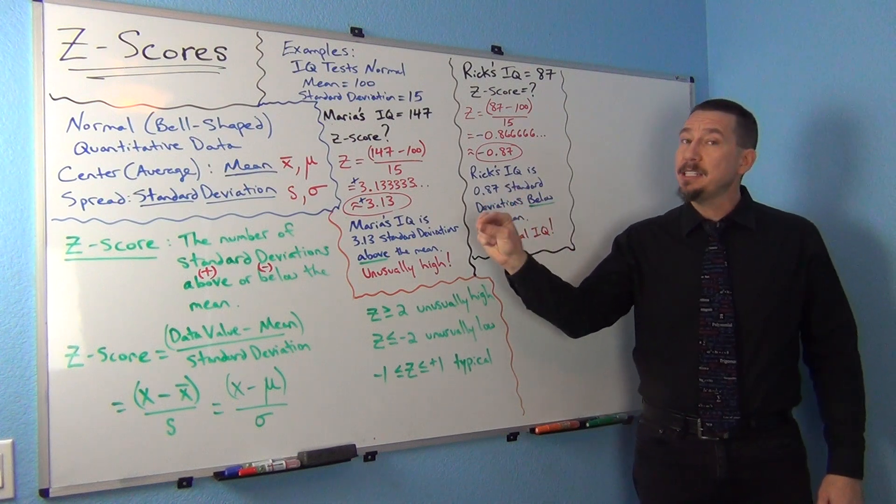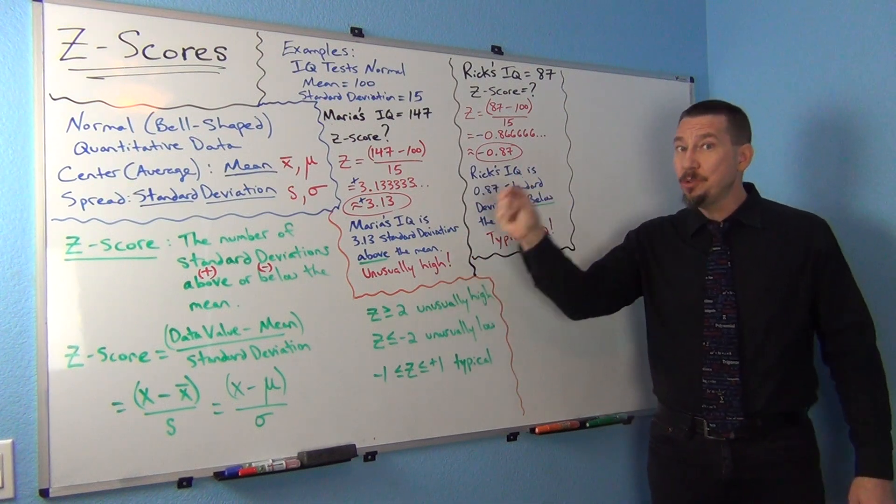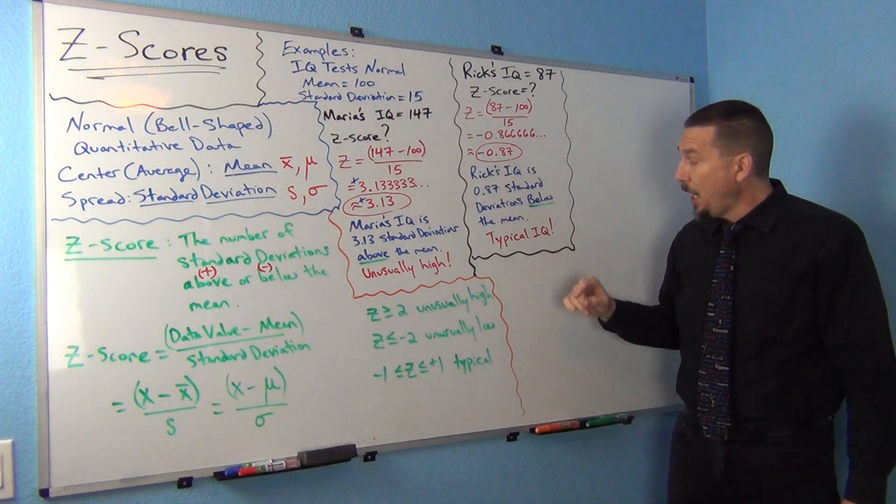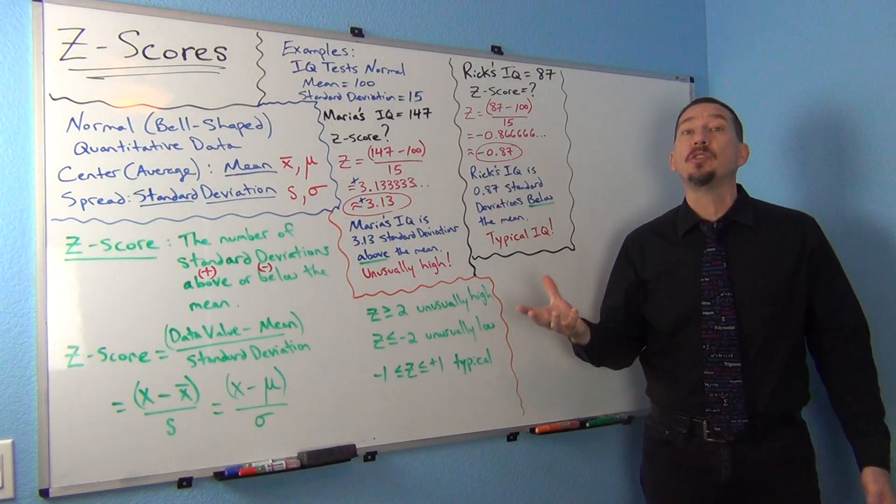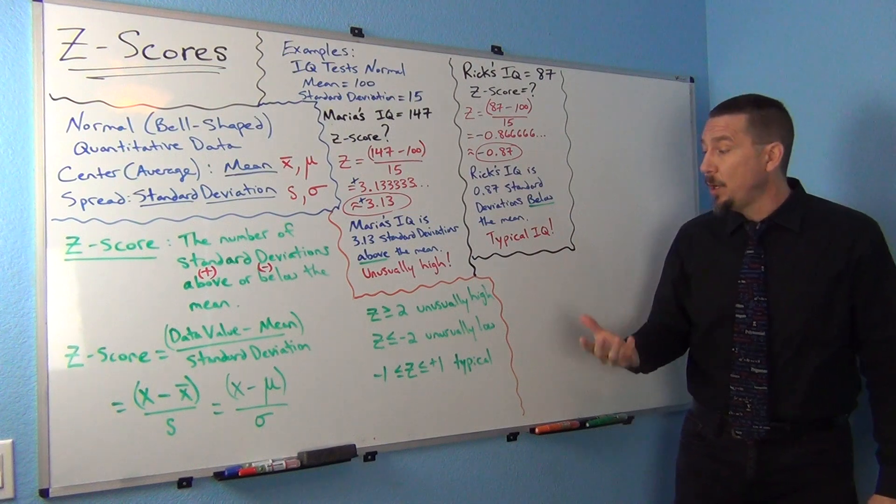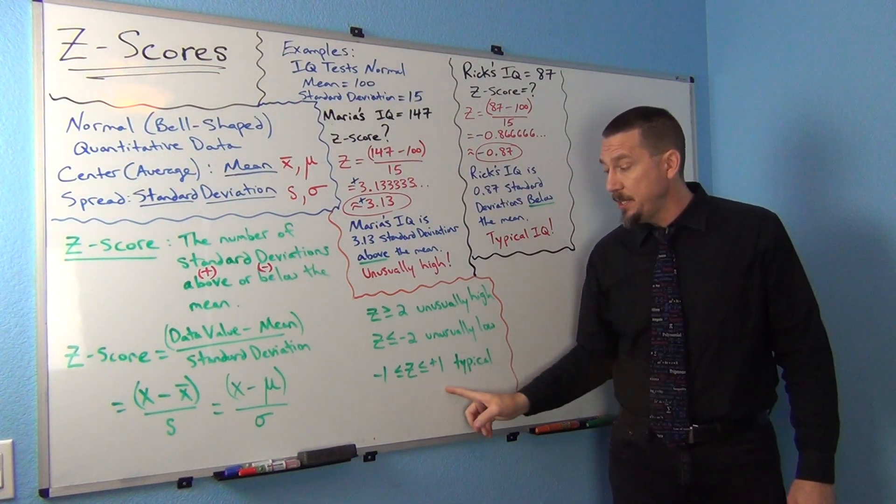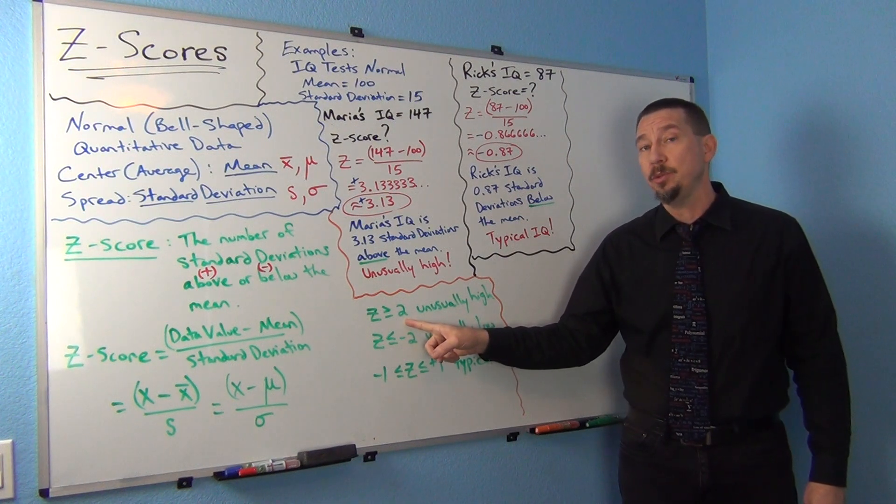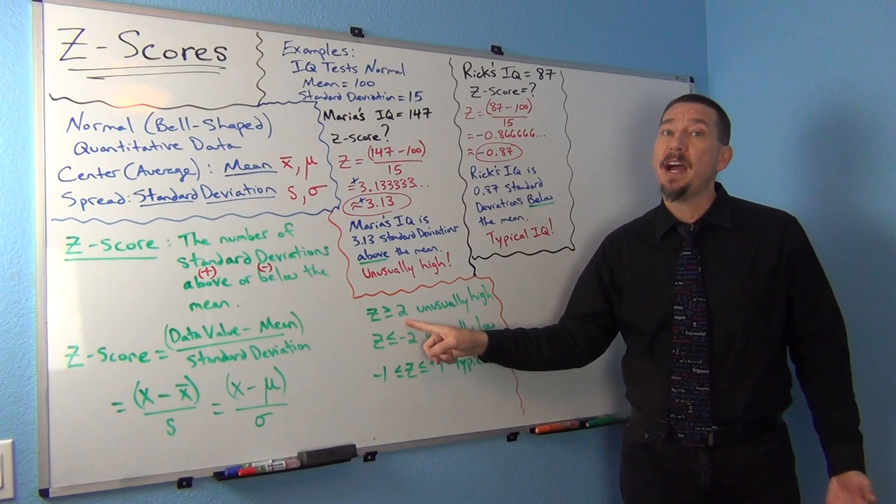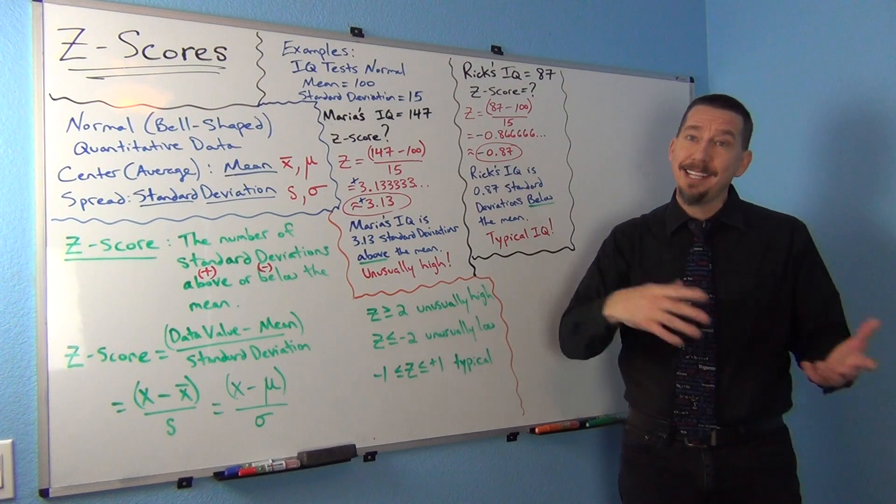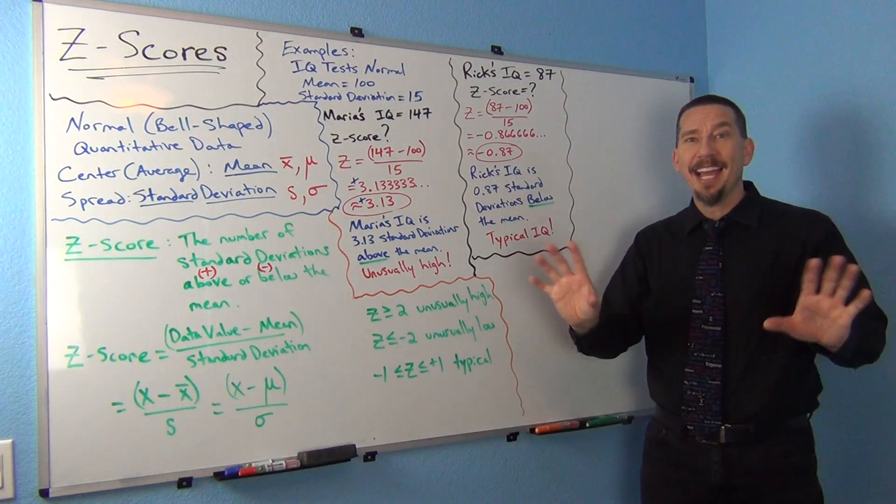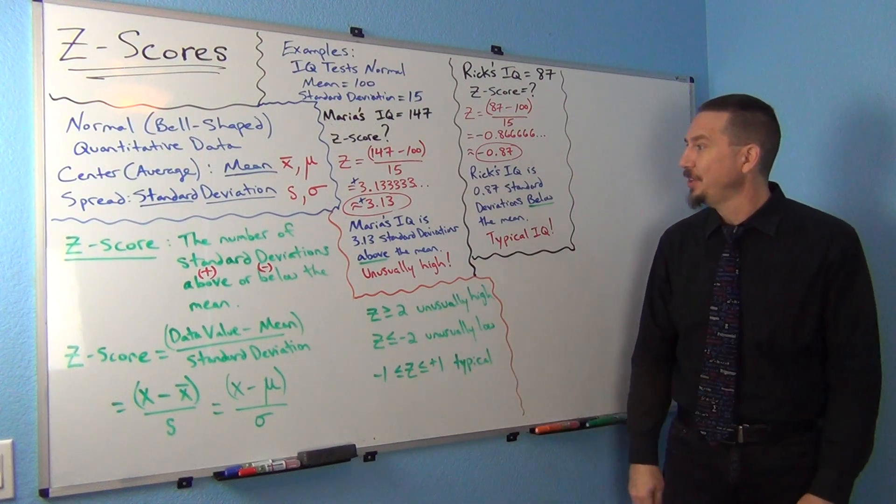Now remember, we talked about this. Not everybody is unusual or typical. There's people that are sort of in that middle ground. So suppose I had a Z-score of 1.5. Well, 1.5 is not typical, it's not in the typical zone. But it's also not unusual, because it's not two or above. So a 1.5 Z-score is not typical and it's not unusual. Don't think that everybody has to fall into typical or unusual.